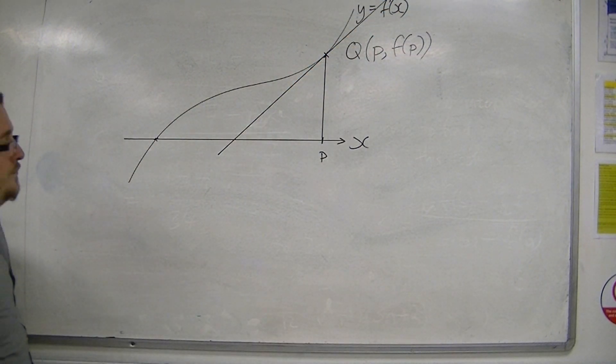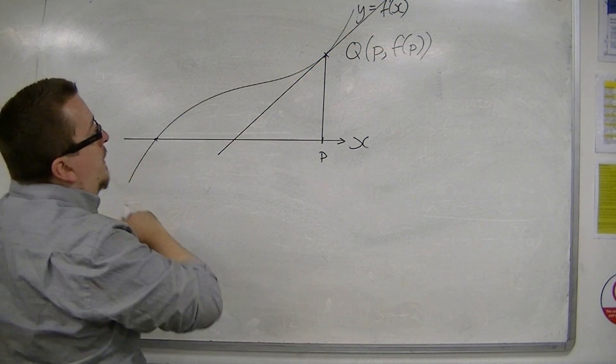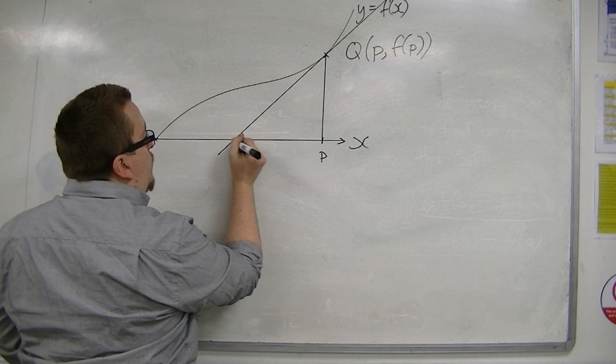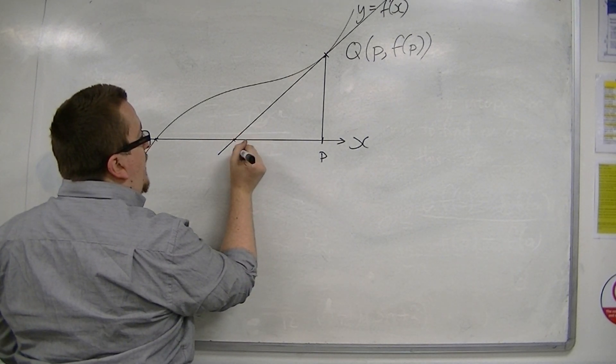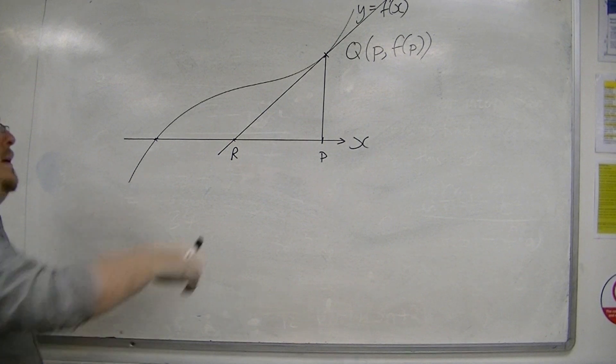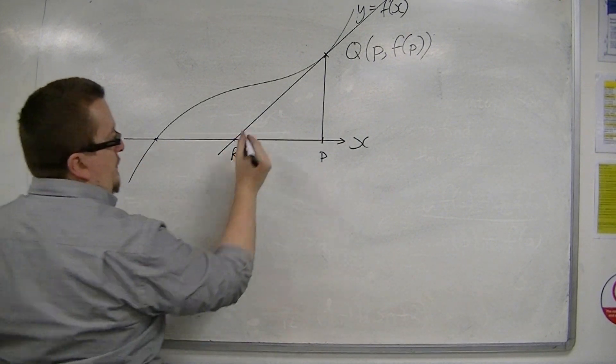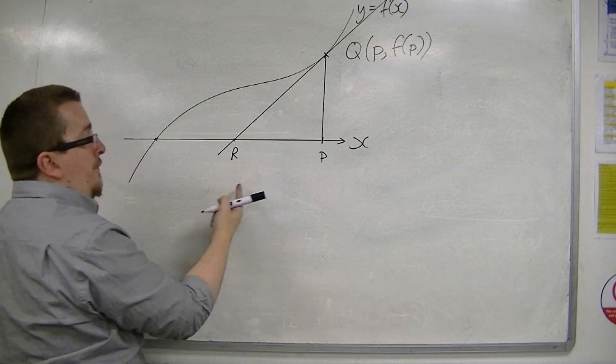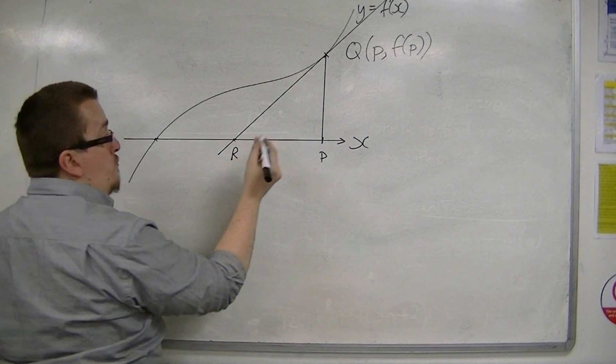So that would be that line there. So let's say that this point where I'm intersecting with the x-axis is R, and this is going to be the estimate to my curve. That line, or the estimate of the solution, sorry, the estimate of the root.